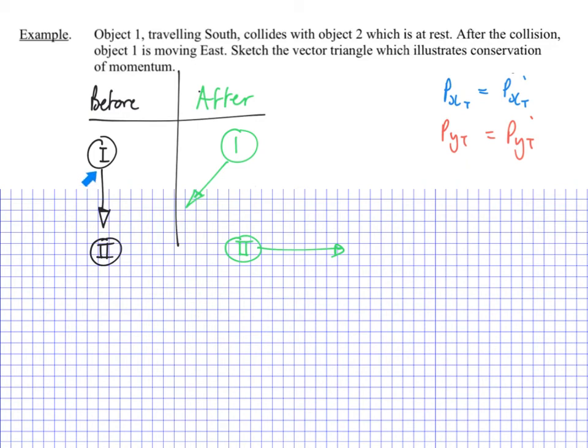But at the beginning of this situation, there was some momentum in the y direction. So knowing that ball number two is now only in the x direction, my y momentum can't just disappear, it has to be conserved. So I know that ball one must have some component that is in the y direction.